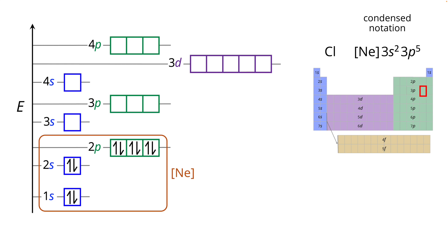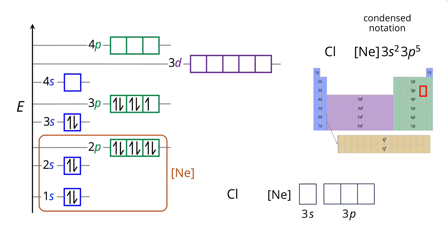Now we write out explicitly the electrons in the outer shell: 3s¹, 3s², then 3p¹, 3p², 3p³ go into separate orbitals with the same spin state. Then 3p⁴ and 3p⁵ have to start pairing up, so we end up with one unpaired electron in the 3p subshell. We write the orbital diagram with neon in brackets representing the filled inner shells, then boxes for orbitals and half arrows for electrons in the outer shell.